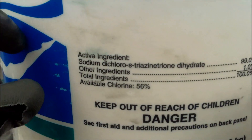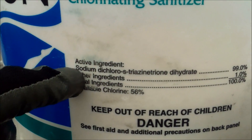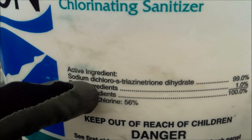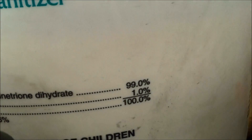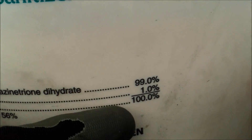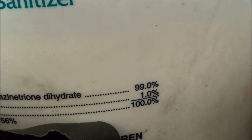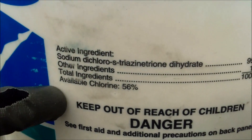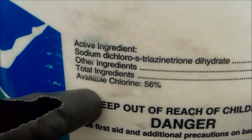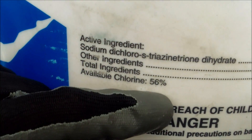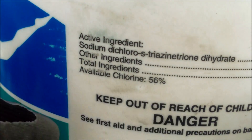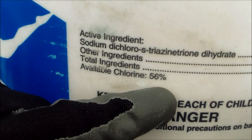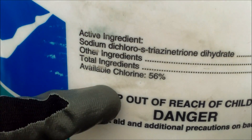Here's a typical label you'll see on a chlorine product. This is dichlor — it shows 99% dichlor, which is the purity of the product, but that's still not the weight of the chlorine. It also has available chlorine, which is based on chlorine gas at 100%, representing the strength of the chlorine — but that's still not the actual weight of the product.